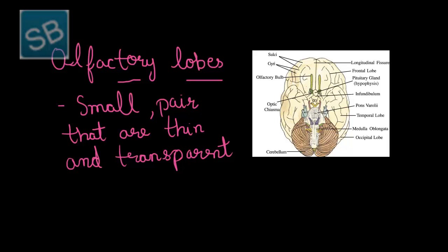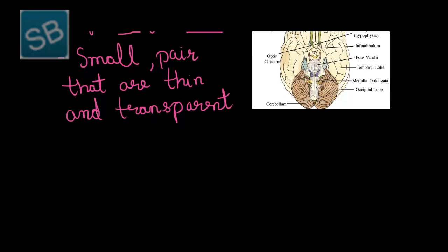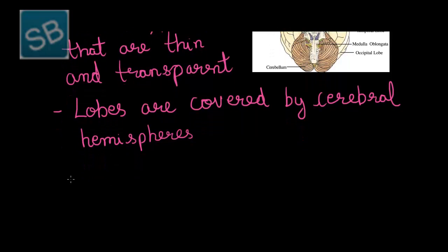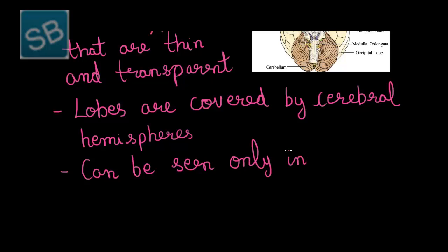These lobes remain hidden due to the presence of the cerebral hemisphere in front. Thus these lobes are covered by the cerebral hemisphere, which is the second part of the forebrain. These olfactory lobes can be seen only from the ventral view of the human brain.